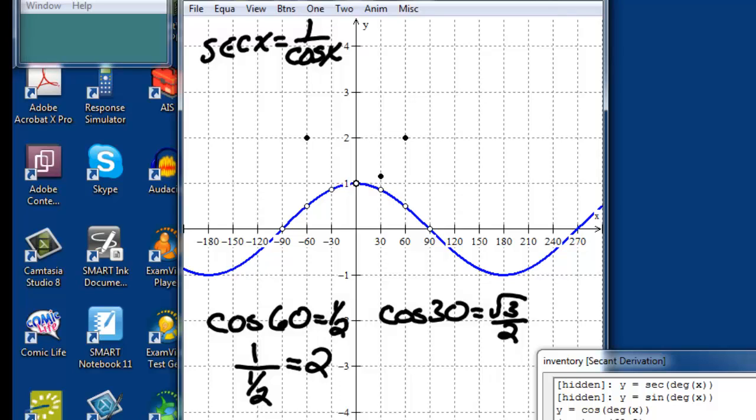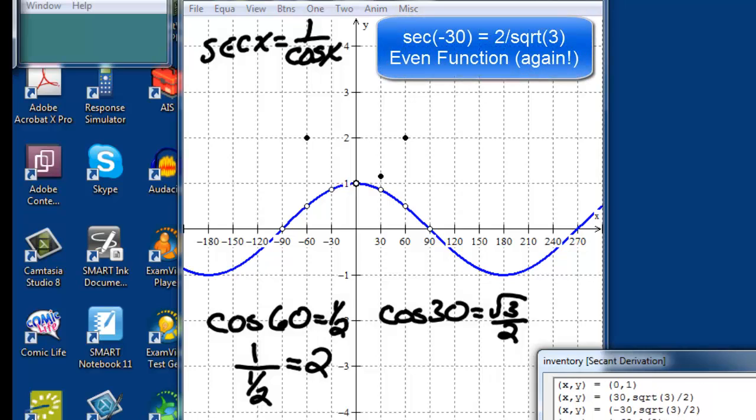At negative 30, we should see the same thing because the cosine of 30 and the cosine of negative 30 are both the same value. Cosine is an even function.